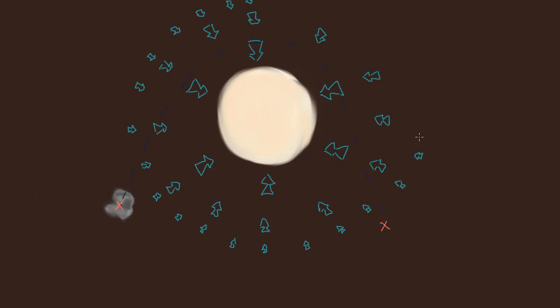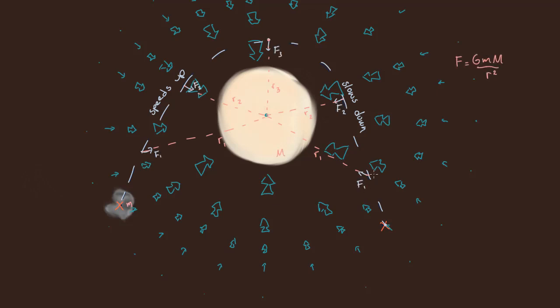Consider a conceptual flyby of an asteroid around the star. The asteroid speeds up, turns around, and slows down as a result of forces applied by the gravitational field. At every point, the gravitational field is applying a force and the asteroid is moving. This means work is being done.